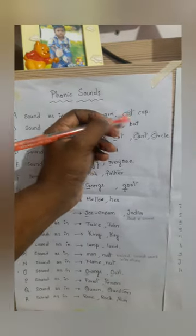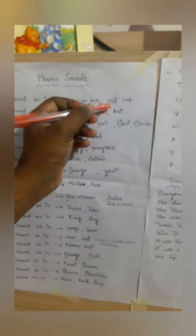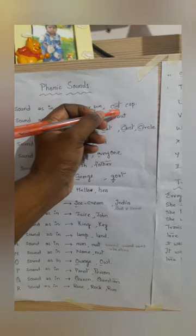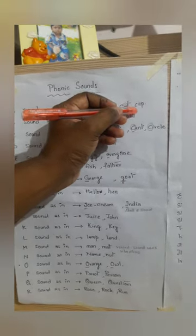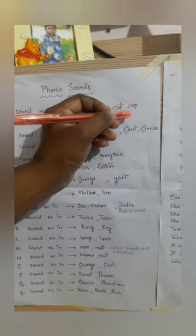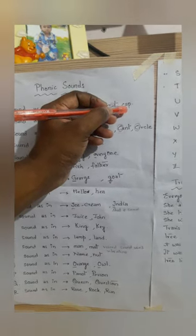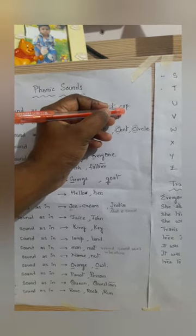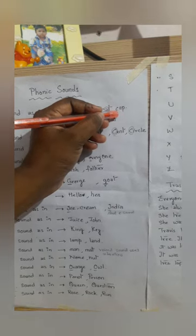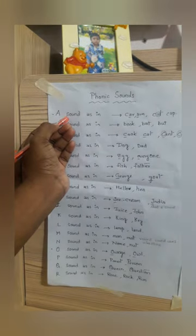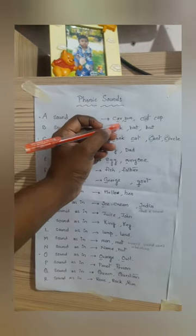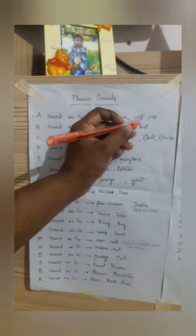But if you see the word C, A, T — the sound of A will change into 'a' — cat. The same way if you look at the word C, A, P — cap — the sound of the letter A will be 'a' — cap. So the sound of A is 'ah' or it also can be 'a'. It has two sounds.